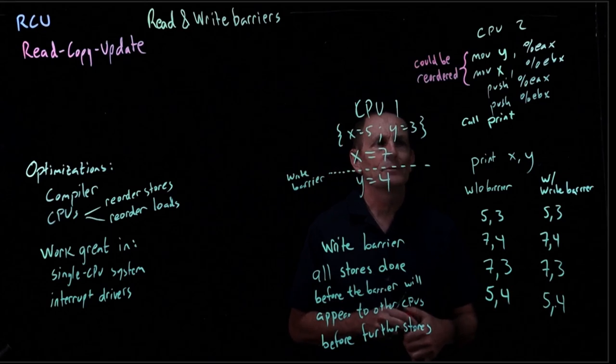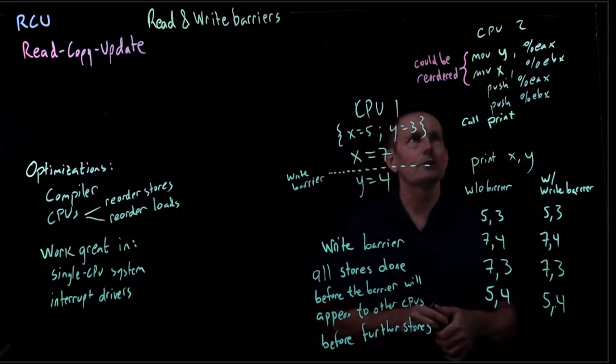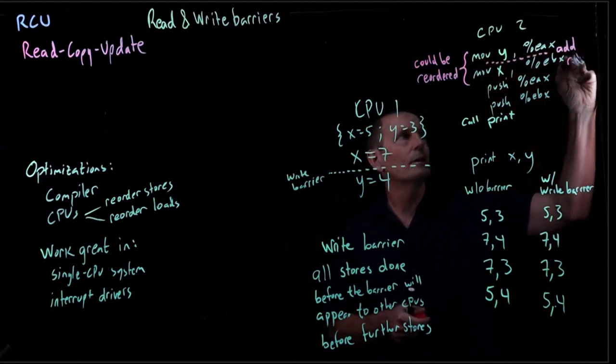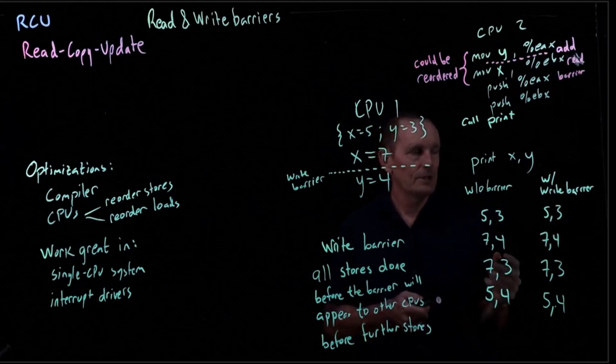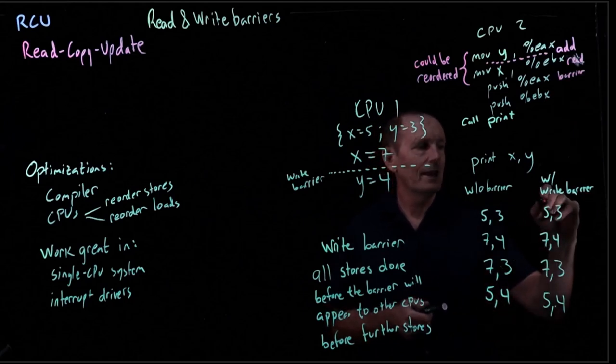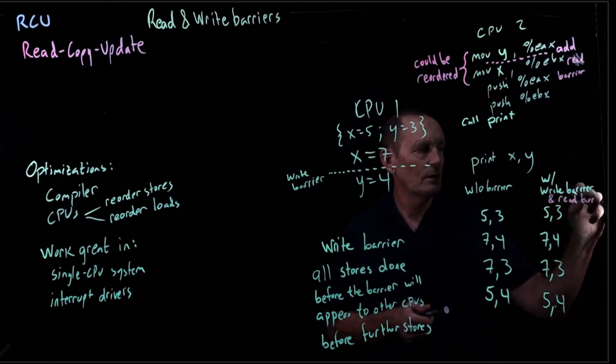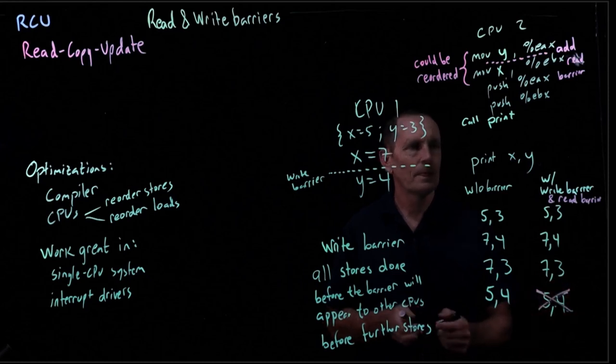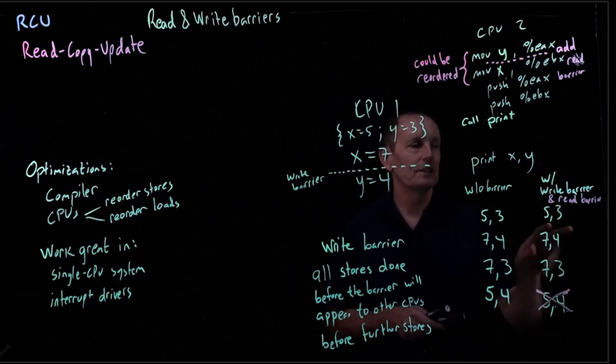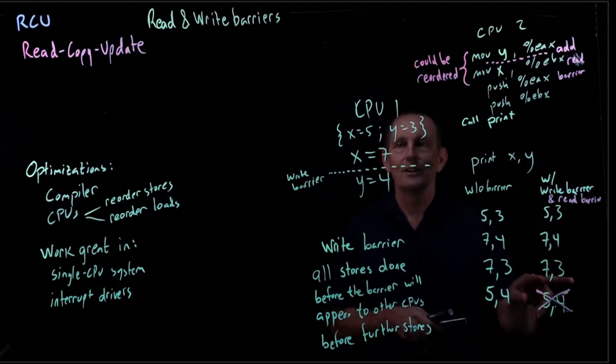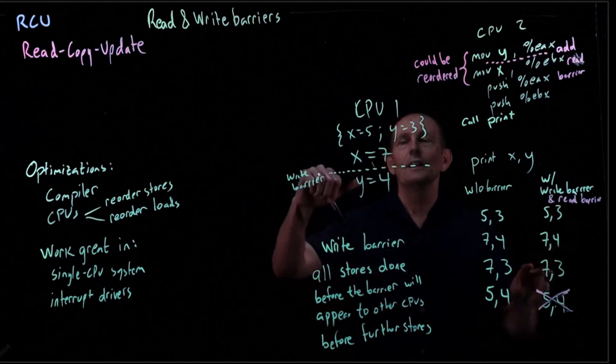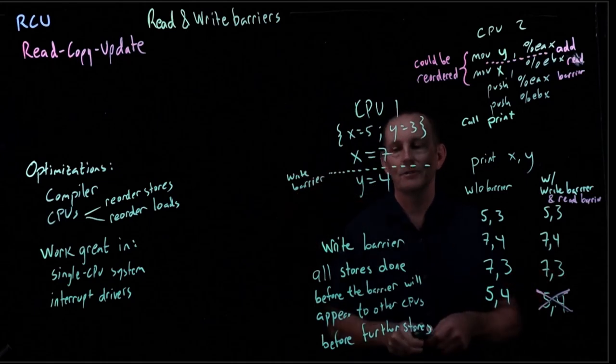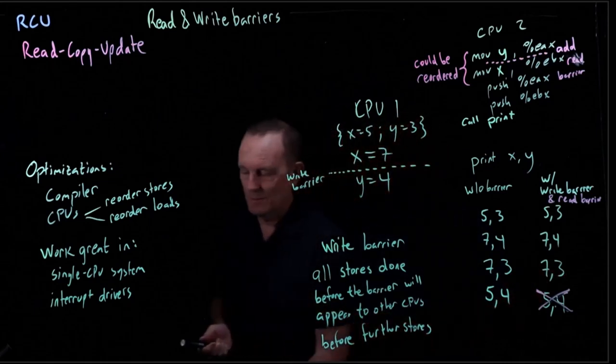So we still haven't gotten rid of the possibility of 5, 4. And I'm going to give you some real life examples where this would matter, because in this particular example, maybe I don't think it matters that much. But the solution would be a read barrier. If we add a read barrier, so if we have a write barrier and a read barrier, then this one can't happen. So we can't get the 5, 4 situation. So we would either see the entirely old, the entirely new, or the old one that we assigned to first and read second, and the new one that we assigned to afterwards.